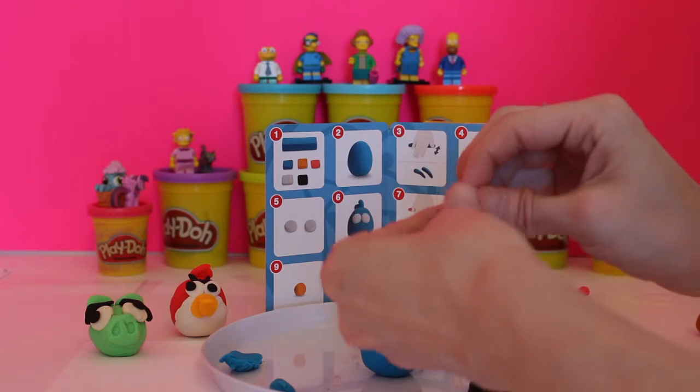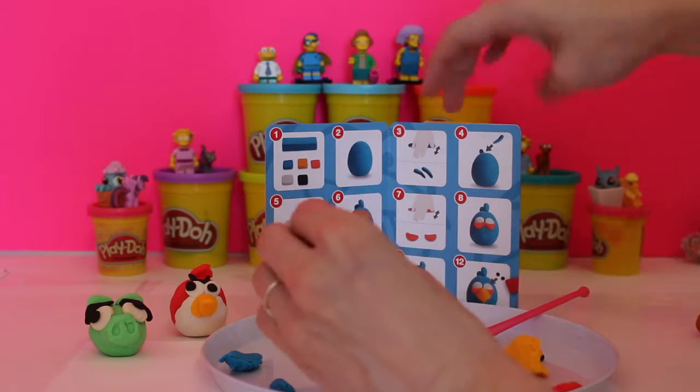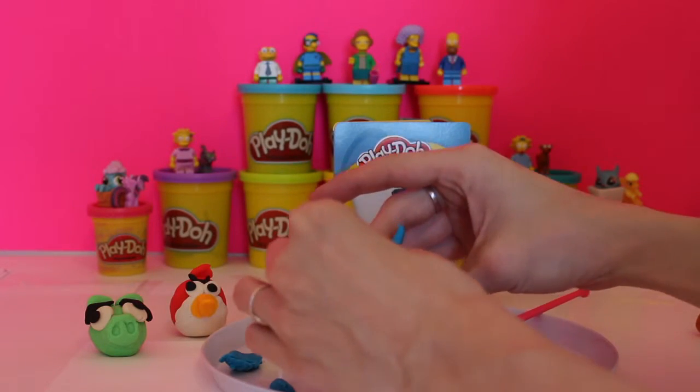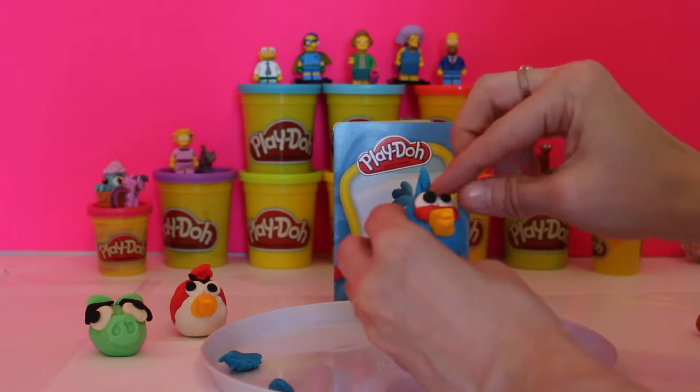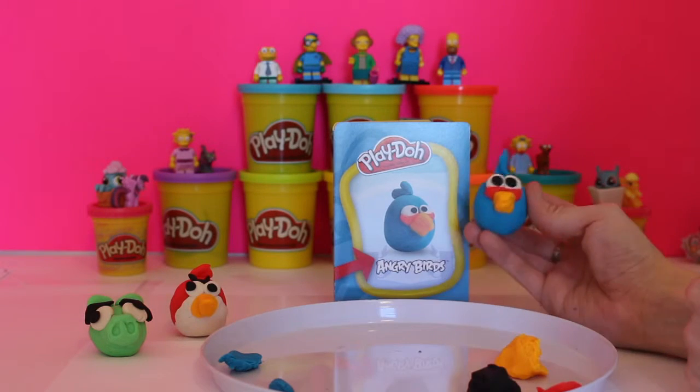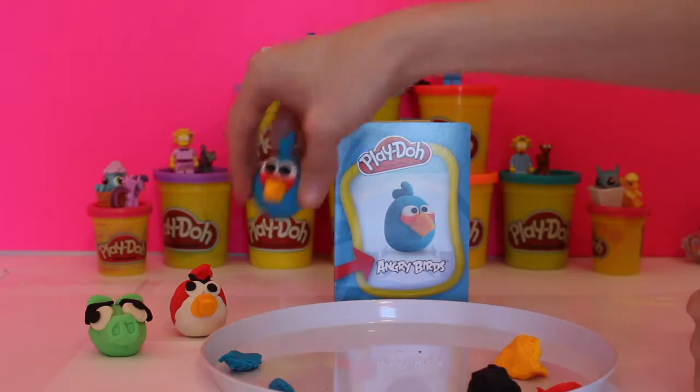And now we need two tiny little eyeballs for him to make him the perfect bird. So let's do his eyes. And I think that we did a pretty decent job on this bird. He looks just like him.